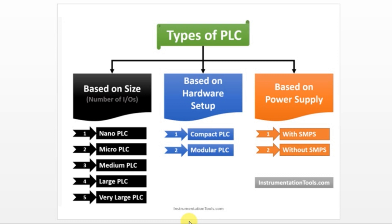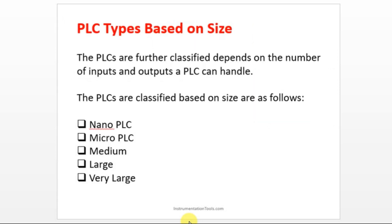Let's move on to the types of PLC. We have three major classification types: based on size, based on hardware setup, and based on power supply. Based on size, we have five types: nano, micro, medium, large, and very large. The difference mainly depends on the number of IOs. Nano PLC has fewer than 10 IOs, while very large PLCs can have 10,000 or 20,000 IOs. Classification also depends on communication and memory.